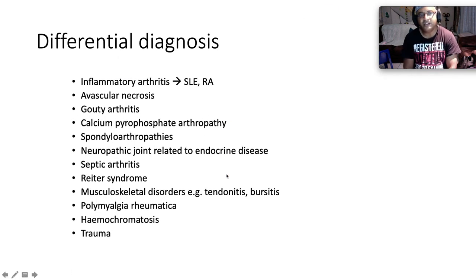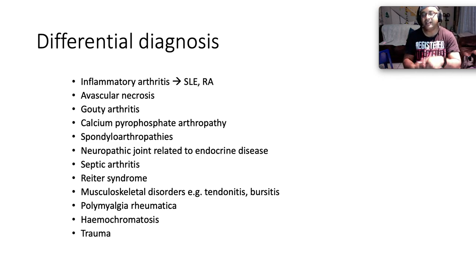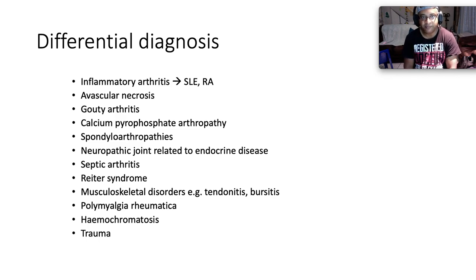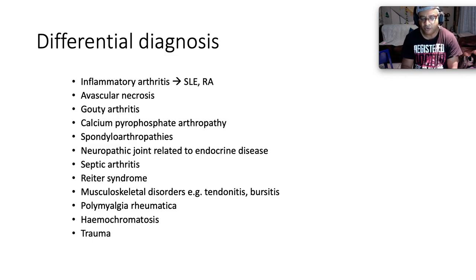The differential diagnosis for osteoarthritis includes inflammatory arthritis such as lupus or rheumatoid arthritis, avascular necrosis — especially in patients taking steroids — gouty arthritis, calcium pyrophosphate arthropathy, spondyloarthropathy, neuropathic joint related to endocrine disease particularly diabetes, septic arthritis, Reiter's syndrome, mastocytial disorders, tendinitis, bursitis, polymyalgia rheumatica, hemochromatosis, and trauma.